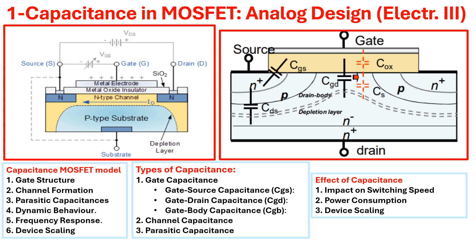Another capacitor is the channel capacitor (CD). When the MOSFET is in the on-state, the channel itself is viewed as a capacitor between the source and gate terminals of the MOSFET. The capacitance of the channel is influenced by many factors, most importantly the channel length and width of the MOSFET and the charge carriers within the channel. MOSFETs also have various parasitic capacitors due to their physical structures, including junction capacitances between the source, drain, and substrate, which can lead to signal integrity issues.